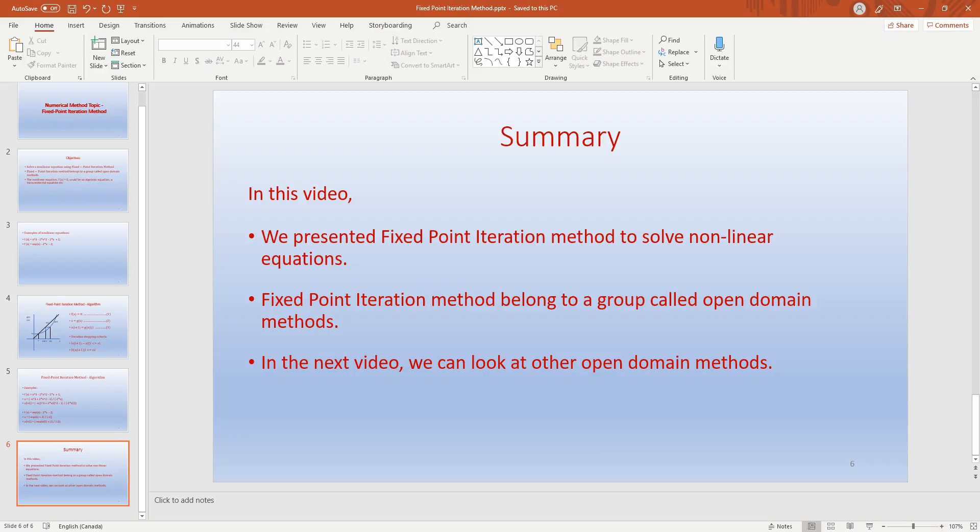So the advantage of open methods is we need just one initial value to start the iteration procedure, and we don't need to know the exact solution at this point of time or where the range where the exact solution lies between two values. But one disadvantage in open domain methods is they can diverge easily. So in the next video we can look at other open domain methods such as Newton's method and secant method.